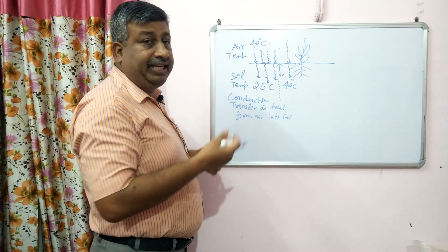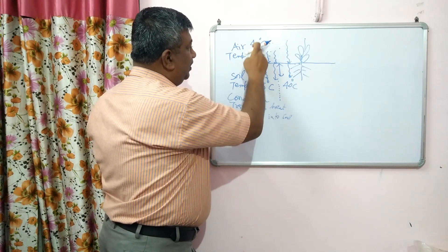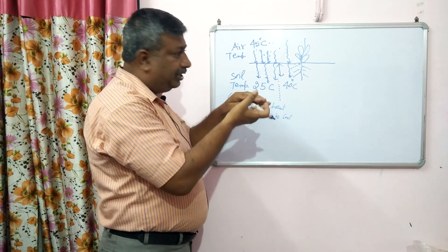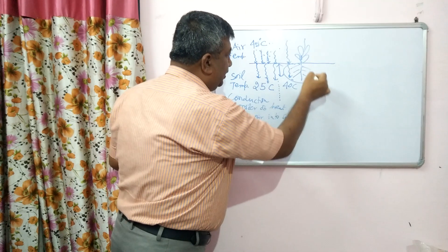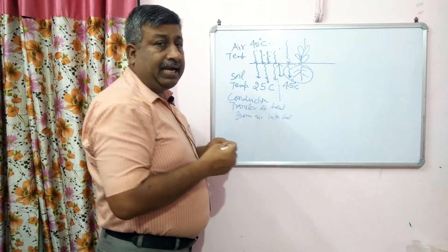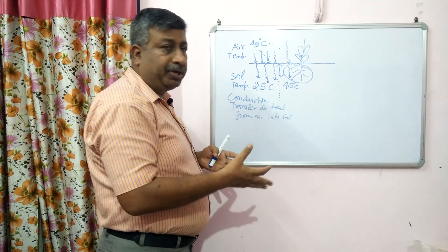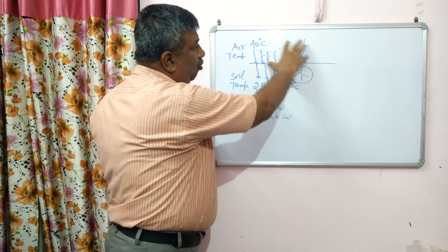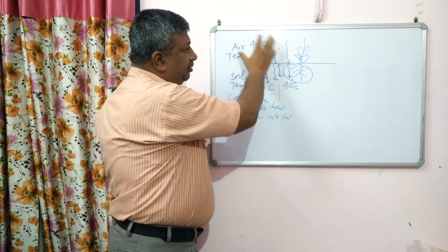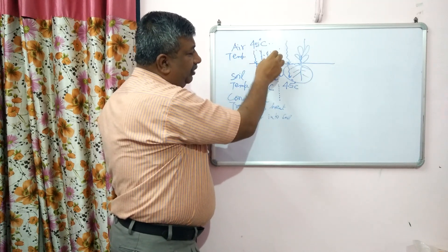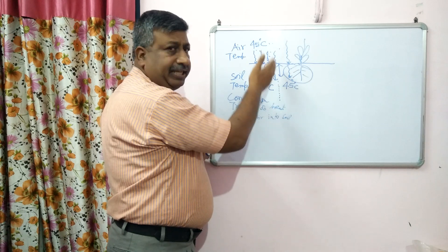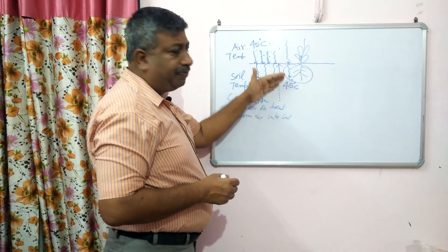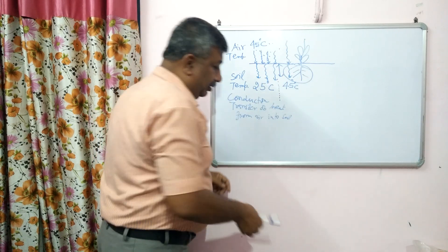Suppose it is 45 degrees centigrade and heat waves are there. The heat will transfer through conduction into the deeper layer, into the root zone, and temperature becomes 45 degrees centigrade. At this high temperature, roots do not work properly — there is poor absorption of nutrients and moisture, poor translocation, poor assimilation, poor photosynthesis, and overall growth is adversely affected. This is the problem.